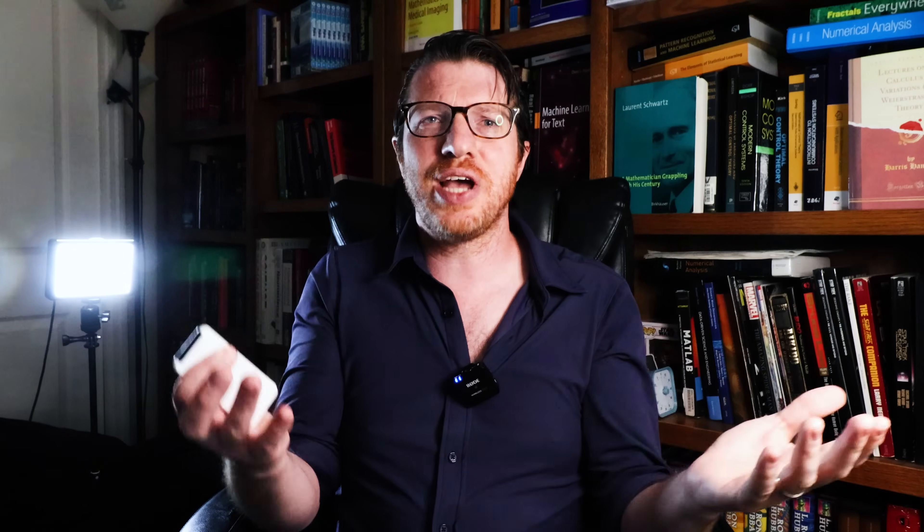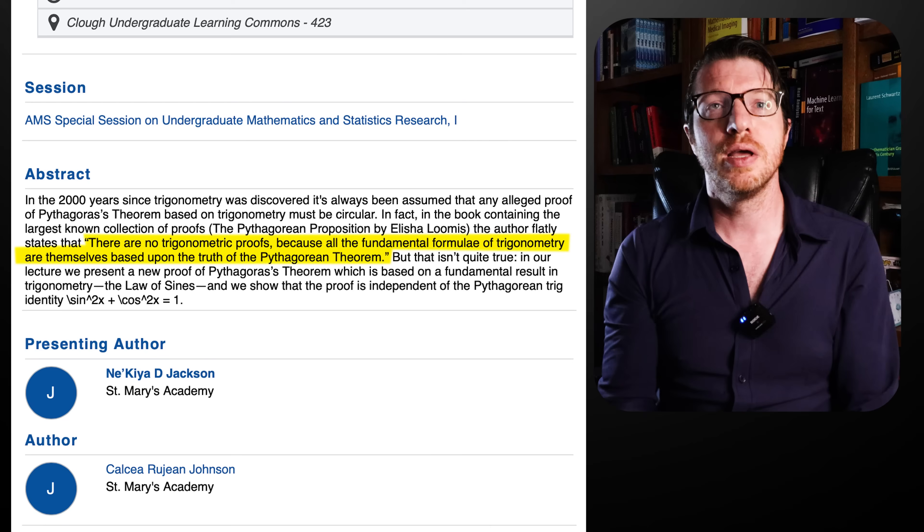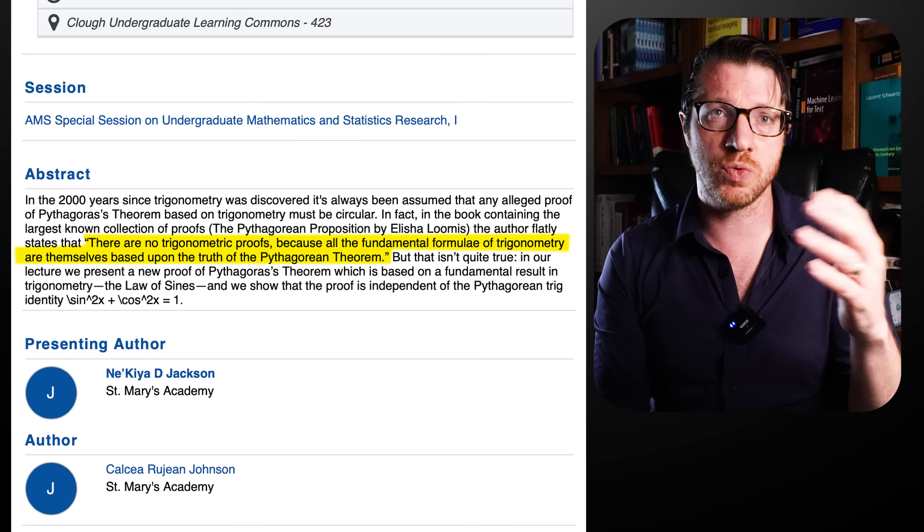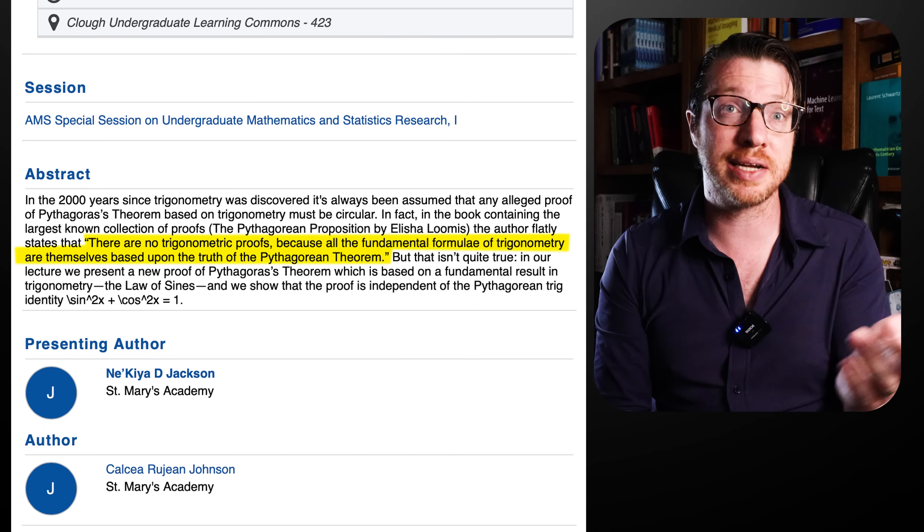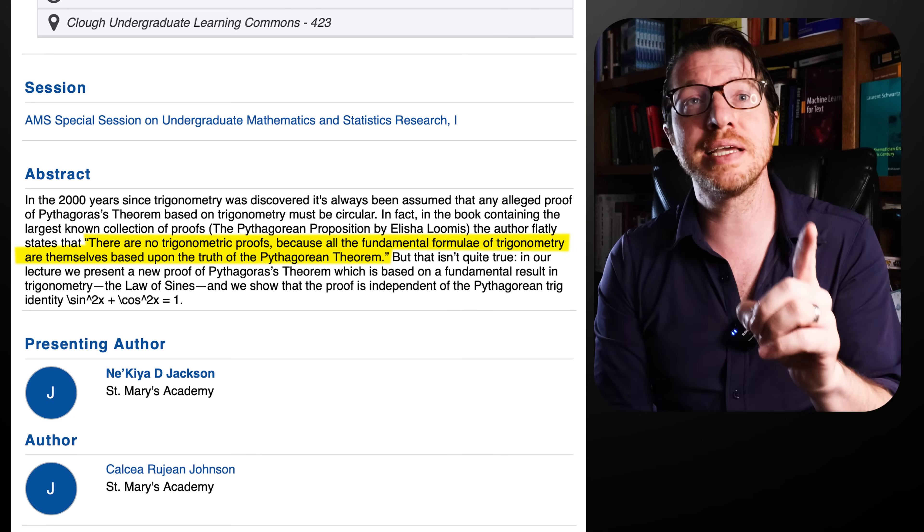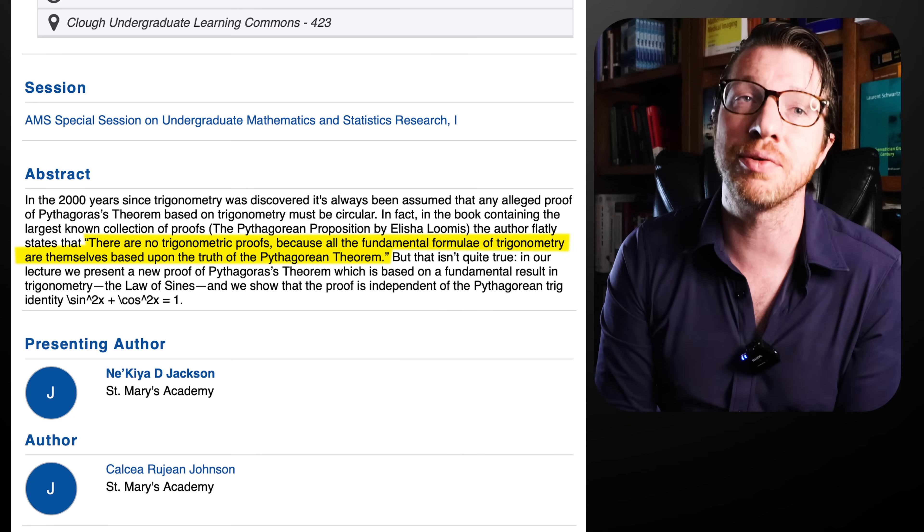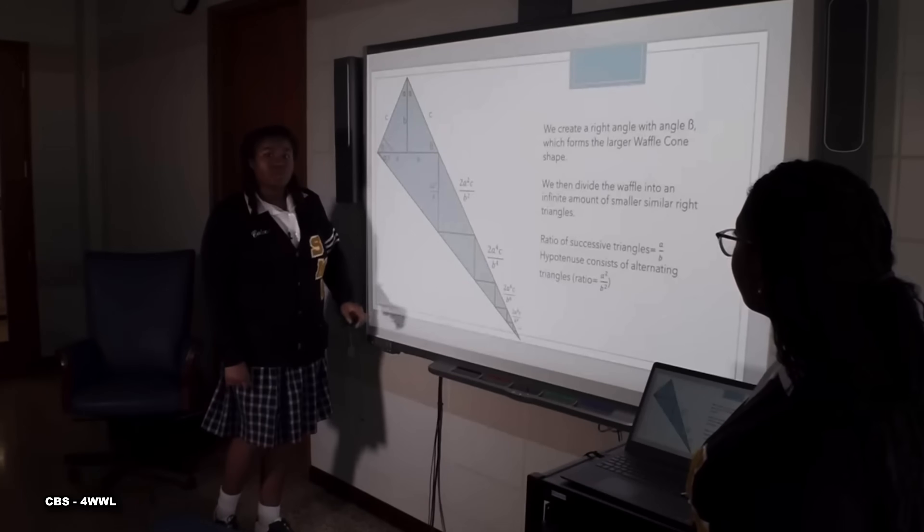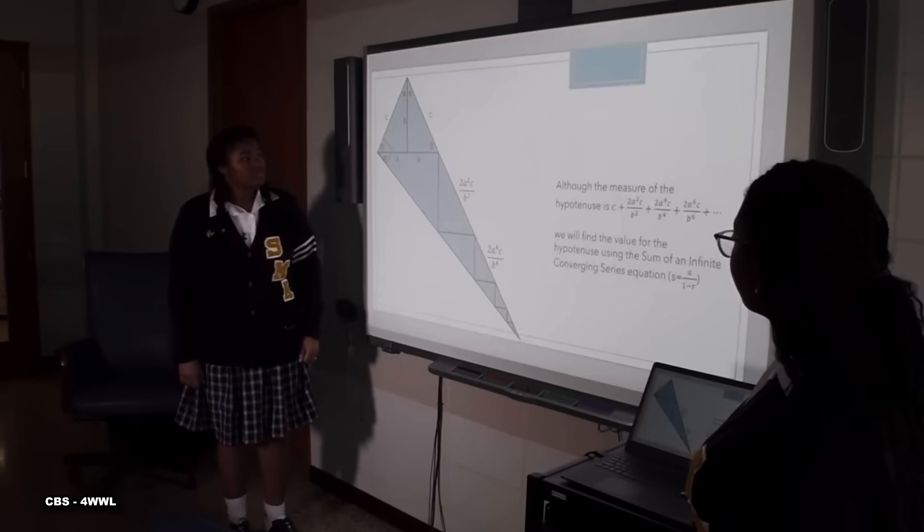So with all these mathematicians attacking the problem, what could Johnson and Jackson possibly have found that no one else did? Apparently, all the theorems in Loomis' book all sit firmly in geometry. That is, never before has a proof been discovered that was purely trigonometric. Or at least that's the claim in Loomis, which is quoted in Johnson and Jackson's abstract as, there are no trigonometric proofs because all of the fundamental formulae of trigonometry are themselves based upon the truth of the Pythagorean theorem. These girls took this as a challenge and furnished a proof that rested on the law of sines. With this hint and this footage from the event, I think we can make a reasonable guess at what their proof was.